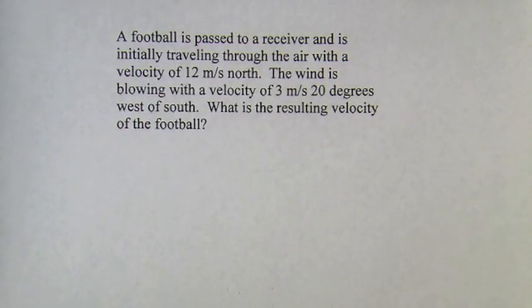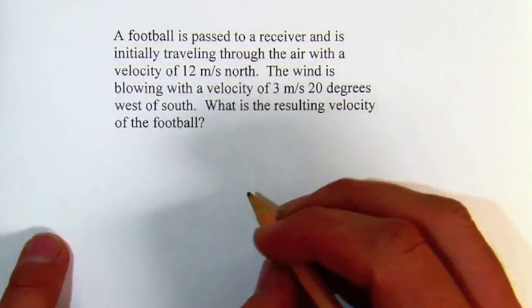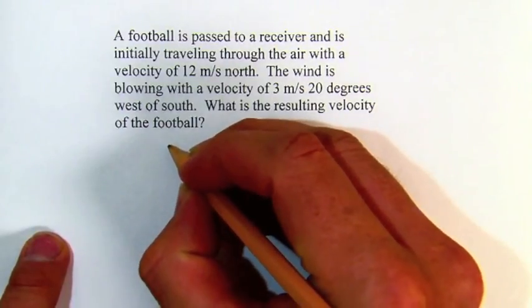A football is passed to a receiver and is initially traveling through the air with a velocity of 12 meters per second north. The wind is blowing with a velocity of 3 meters per second, 20 degrees west of south. What is the resulting velocity of the football?